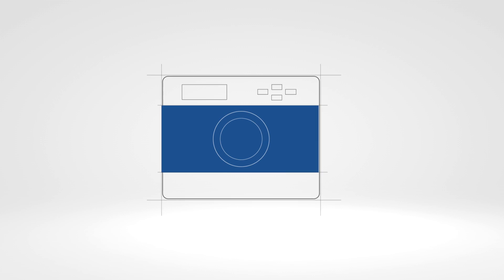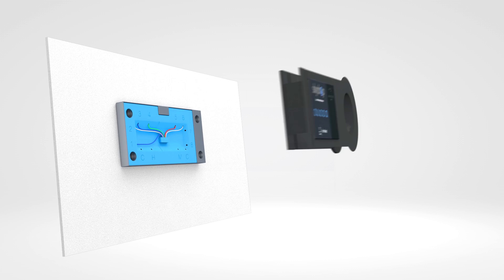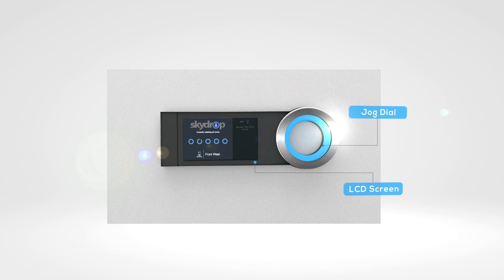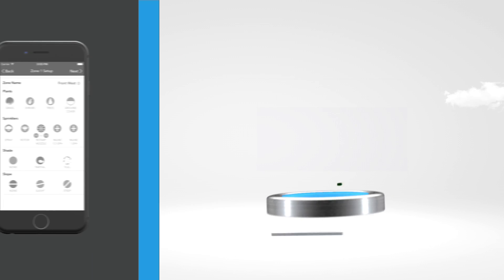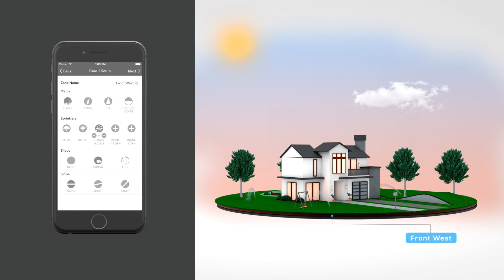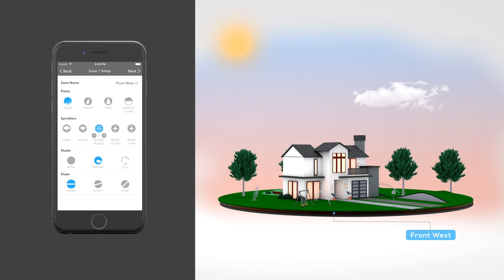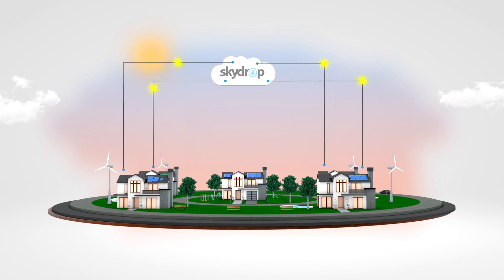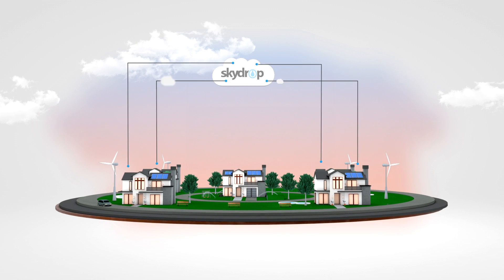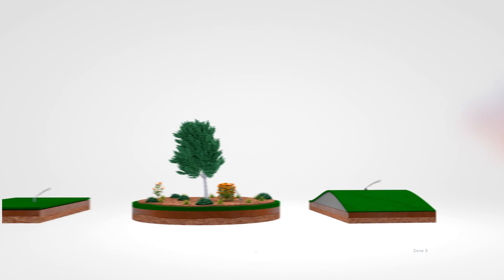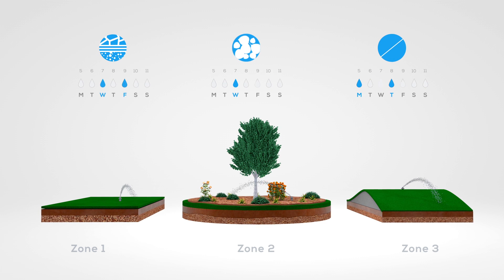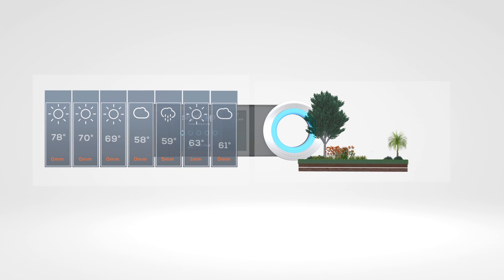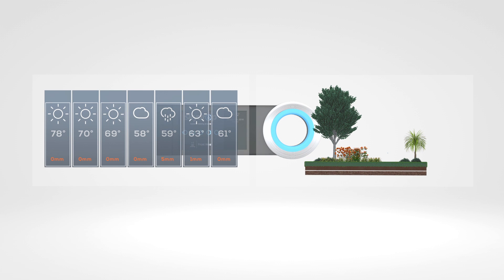During the installation, your technician will remove your old timer and connect SkyDrop to your existing sprinkler system. Don't worry, you're not going to miss that old timer one bit. Next, the technician will input important zone information that will be used to determine the optimal watering schedule for your landscape. SkyDrop connects to the cloud to monitor hyperlocal weather data, often from a weather station in your own neighborhood. And because your zones are independent of each other, SkyDrop will create a watering schedule perfectly suited for each zone. It's like your own personal weatherman and landscape specialist working together to make your lawn amazing.